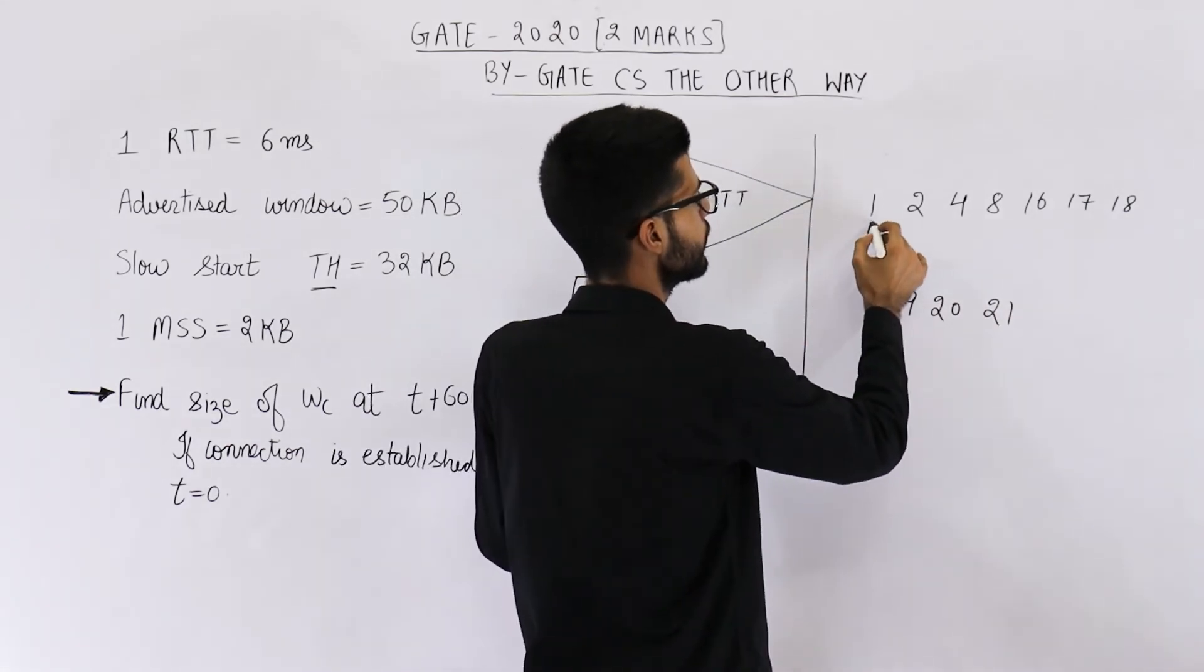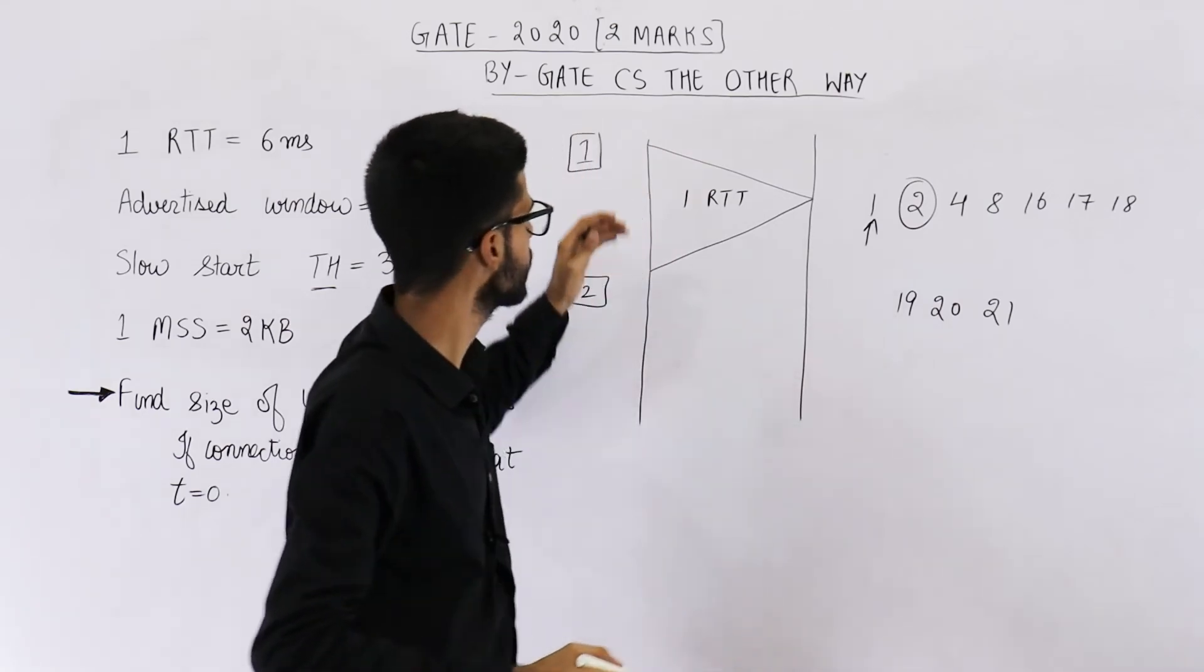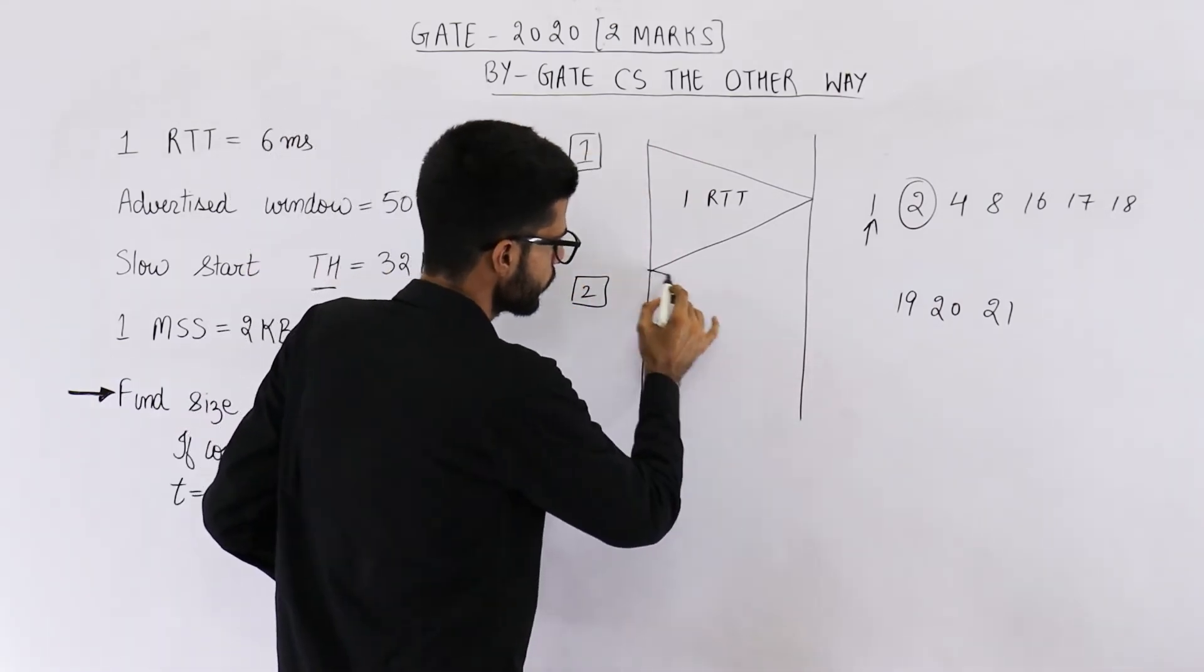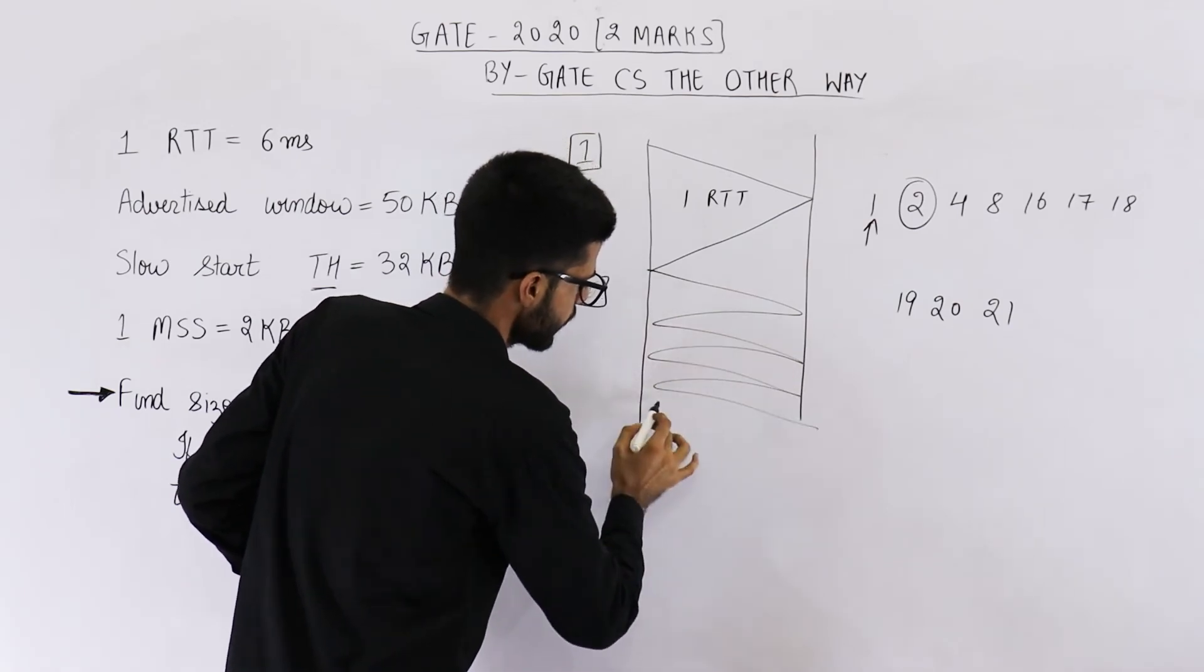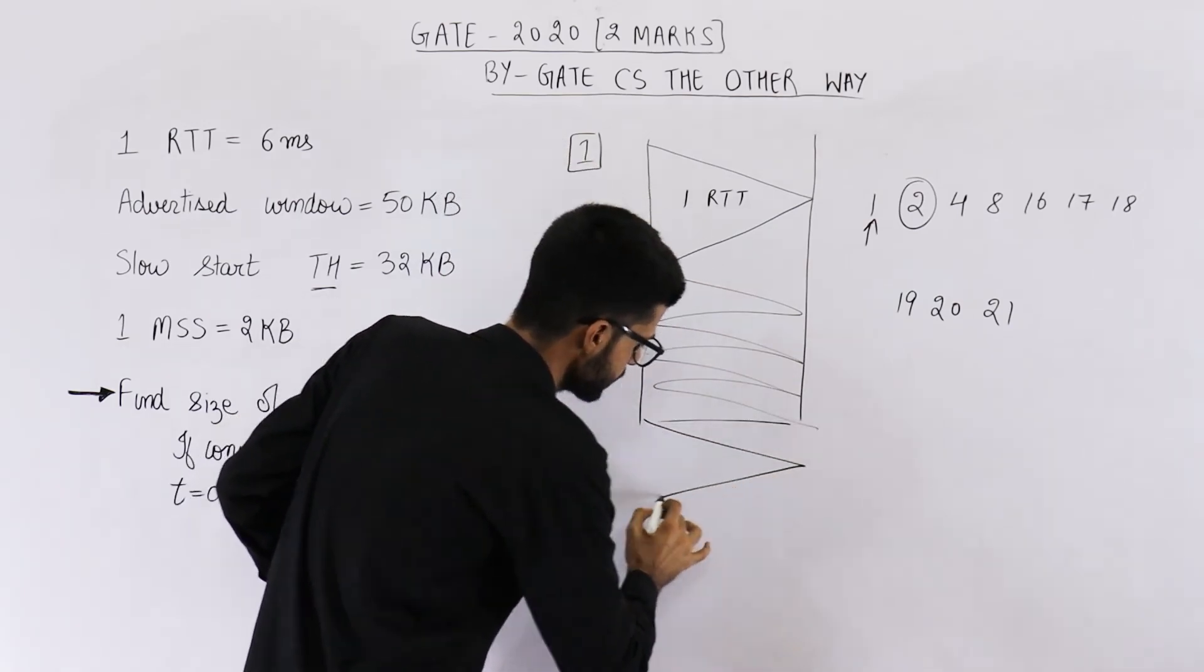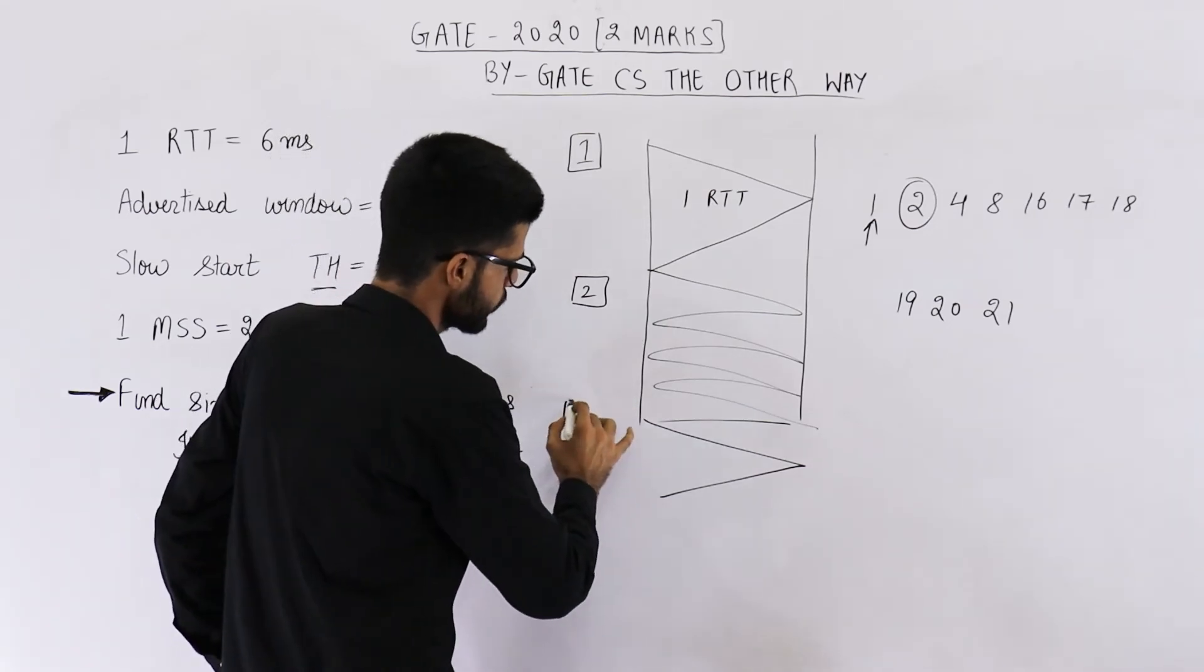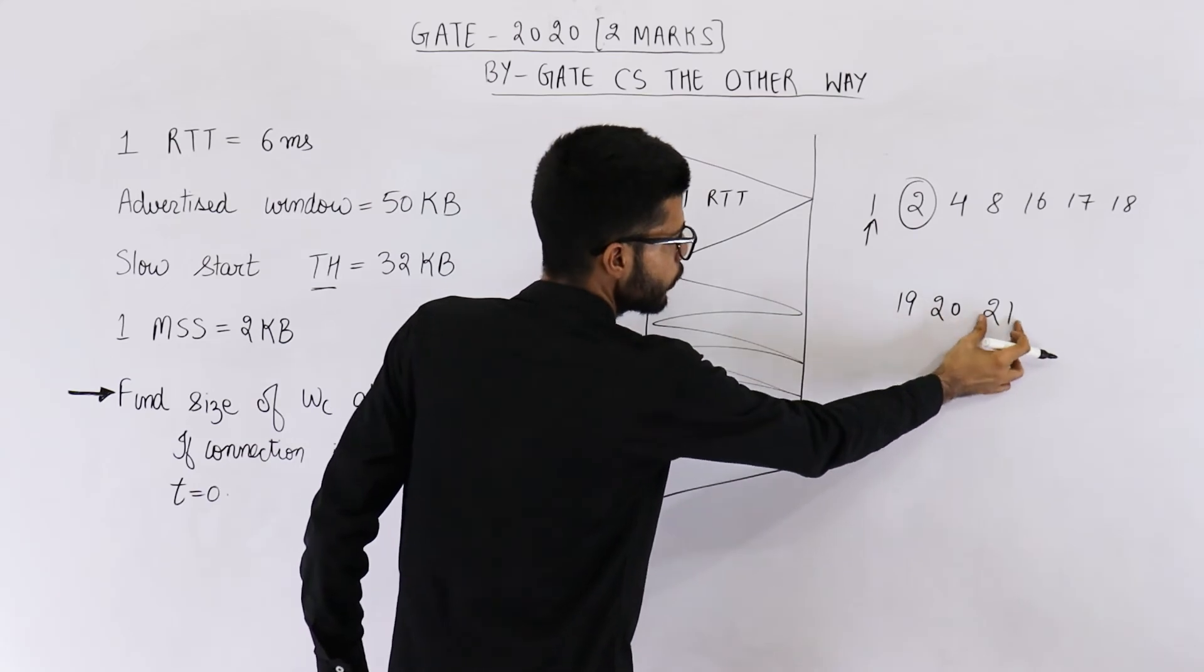This after first RTT, this is the size. After one RTT, this is the size. Similarly, so there will be a lot of RTTs. And after 10th RTT, in starting of the 10th RTT, the window size will be this one 21.